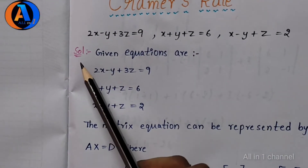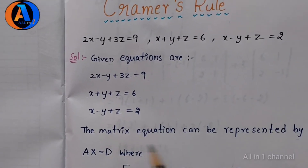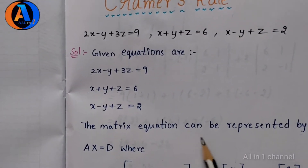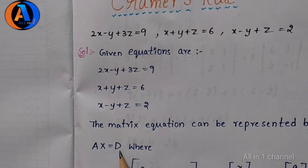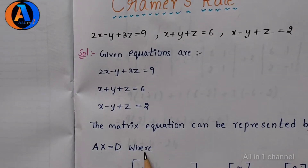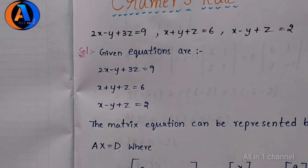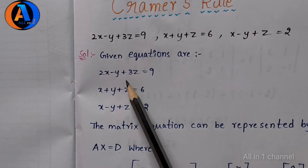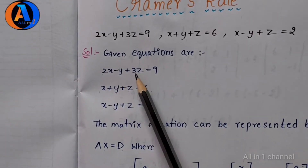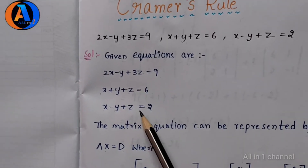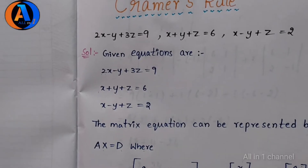Solution. Given equations are. The matrix equation can be represented by Ax equal to d, where A equals the matrix of coefficients of x, y, z in the 3 equations: 2, minus 1, 3.